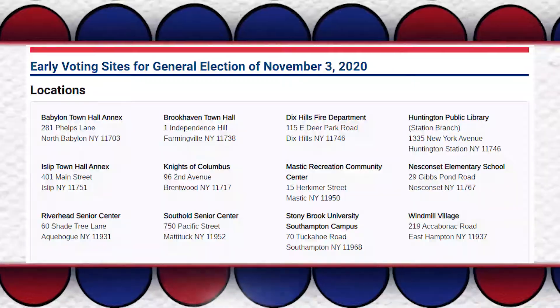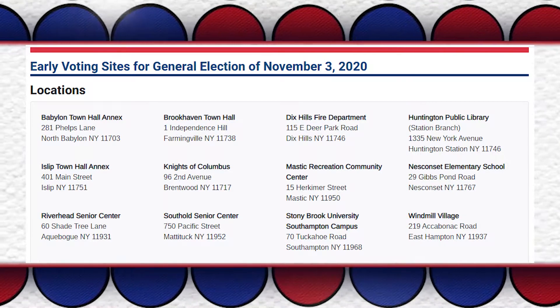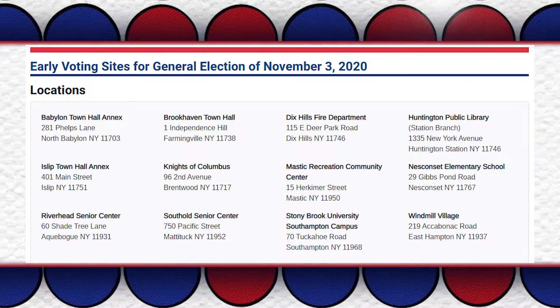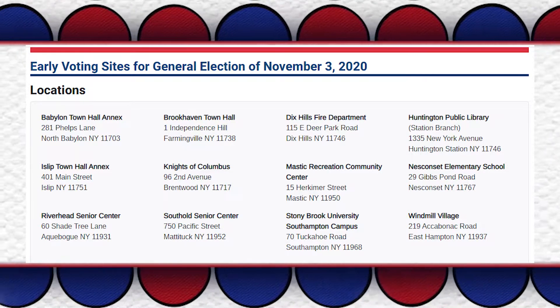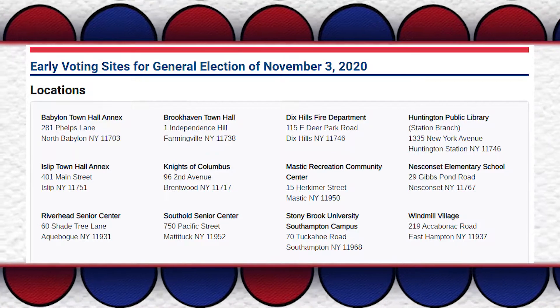If you're not able to go to a polling place on Election Day, you can also vote early. But remember, you must be registered to vote. Here's a list of early voting sites and the dates they will be available to you. This information is also listed on our Andrew Goodman website.